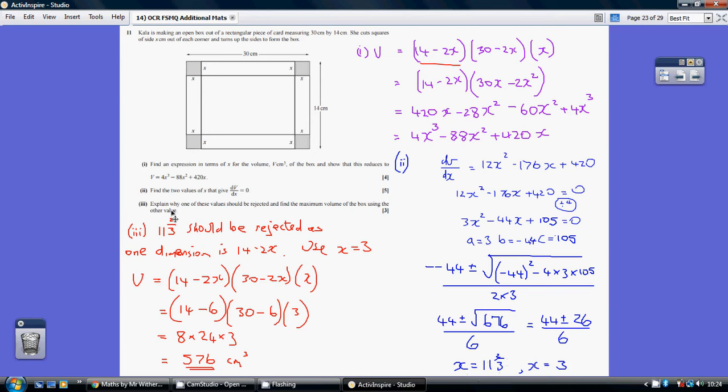Now for part 3, explain why one of these values should be rejected. Think about the lengths here. One of our lengths is 14 take away 2x. If you start substituting 11 and 2/3 into that, you're going to end up with a negative length which clearly isn't possible. So you need to reject the 11 and 2/3.